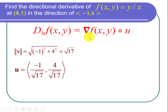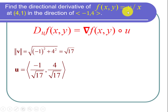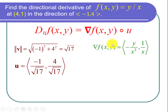The next step is to find the gradient of f at x, y. Those are the partial derivatives of the function f at x, y as a vector. The derivative of f with respect to x: y over x is the same as y times x to the negative 1, so the derivative is negative y times x to the negative 2, or negative y over x squared.